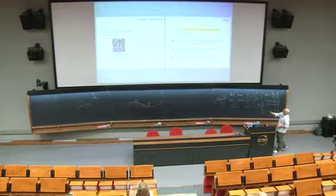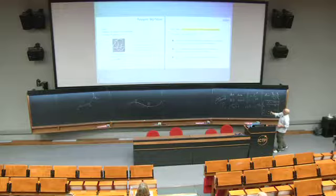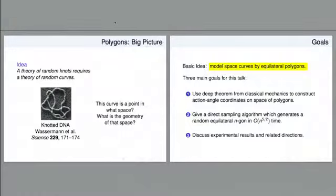Suppose we have one of our DNA knots. The question you want to ask as a mathematician is, what's the space of these curves? This knot is some sample from a probability space, from a probability distribution. Well, what's the space? What's the distribution?